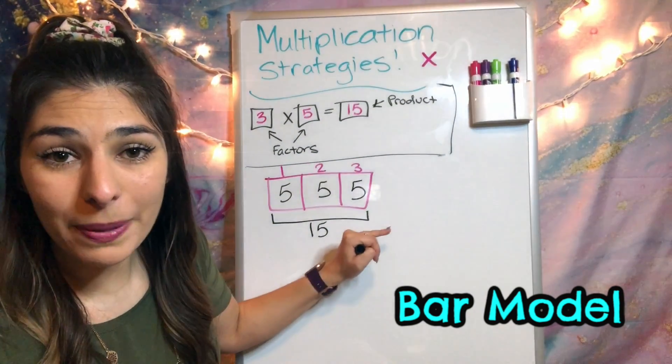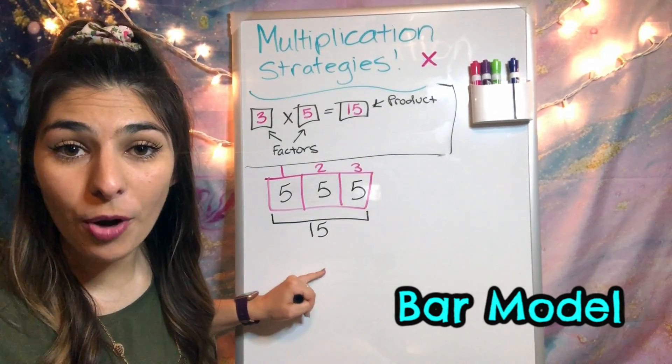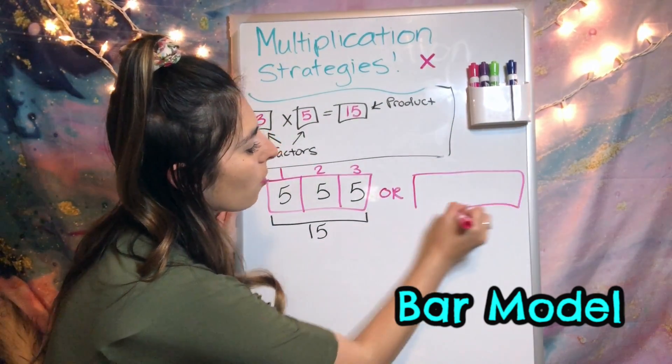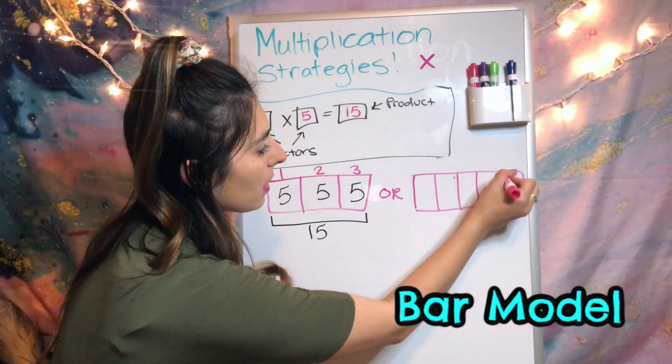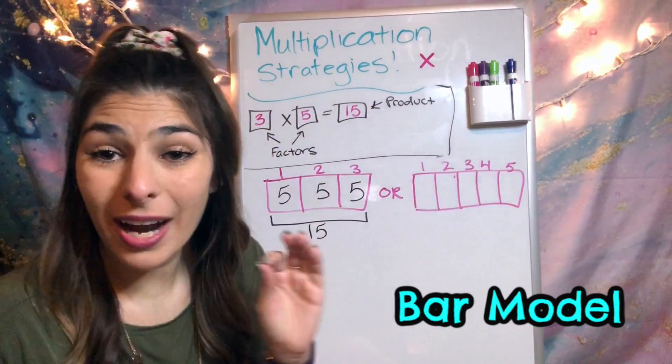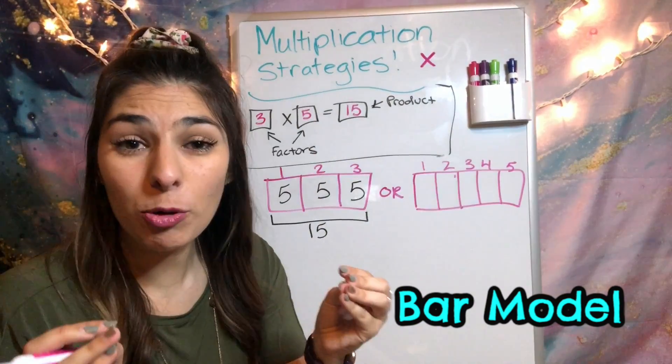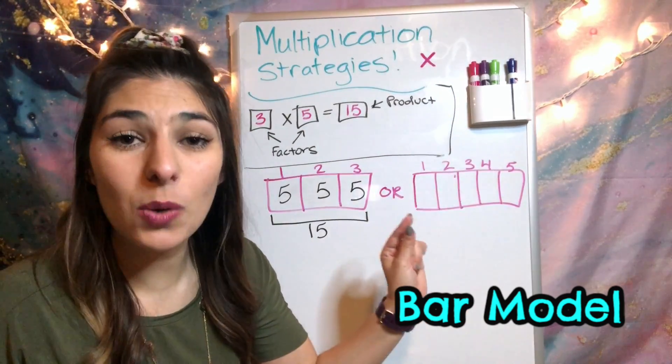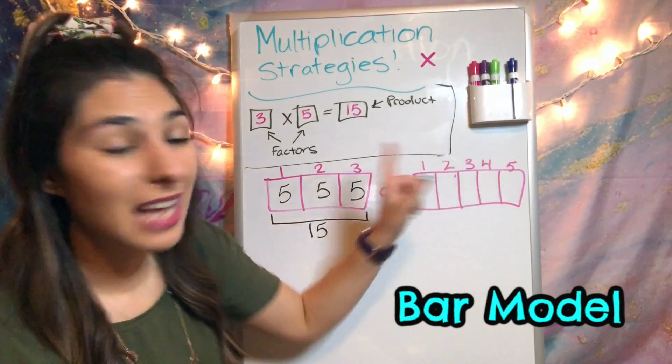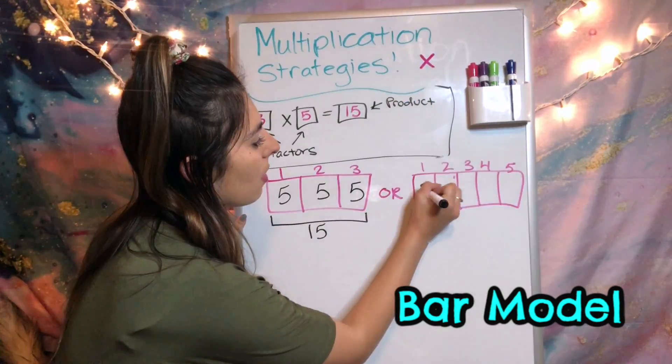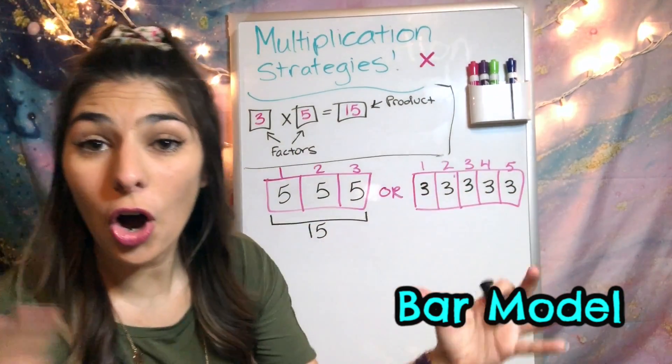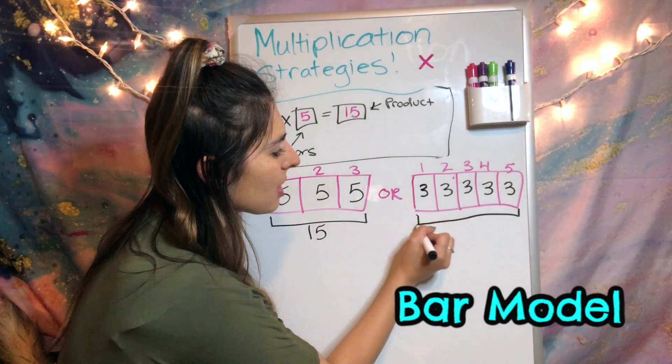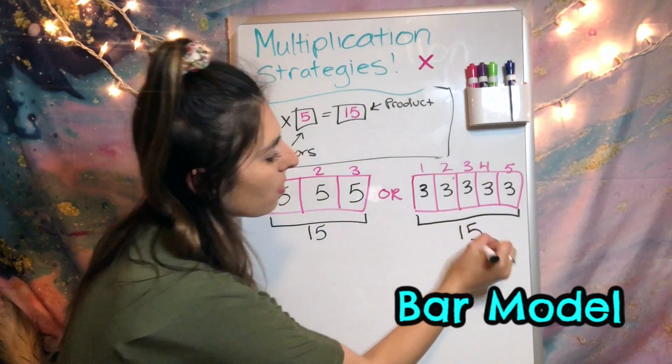With this bar model or strip diagram, our product is going to go along the bottom. So we're going to show that if we connect these sides all the way throughout this bar, that is 15. We are connecting all of those little pieces in our bar model to show our product at the bottom. Again, we can flip it with the factors and this time we would have a bar with 5 pieces, and each section gets a 3. We're going to show that by connecting these showing all the way equals 15.